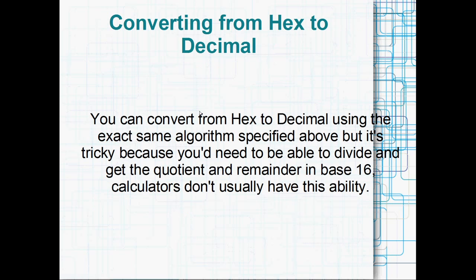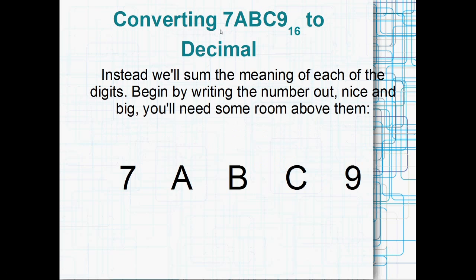Okay, converting from hex to decimal. You can convert from hex to decimal using the exact same algorithm specified above. You can't really because if you type those divisions into a calculator, it's not going to give you the answer in hexadecimal. It's going to give you the answer in decimal, so it doesn't help. Most calculators. If you've got a calculator that you can just change into hexadecimal, like the Windows calculator can write in hexadecimal, you might want to use that. But usually this next algorithm will be easier to convert from hex to decimal. So this is going the other way. Let's convert 7ABC9 in base 16 or hexadecimal to its decimal equivalent. So what does that actually mean? 7ABC9 in decimal.